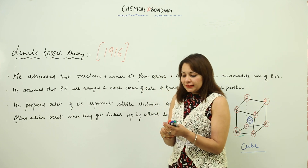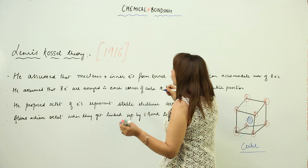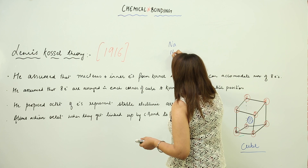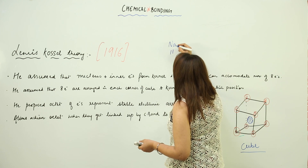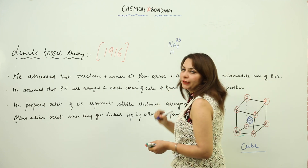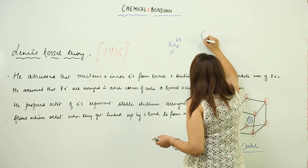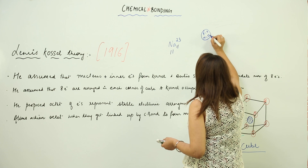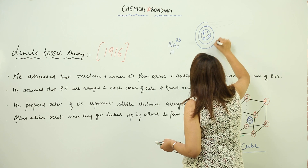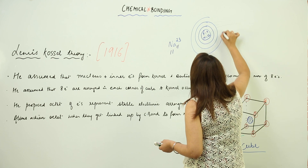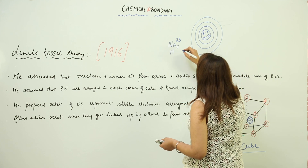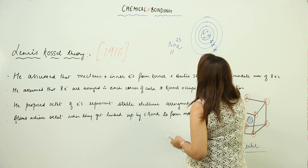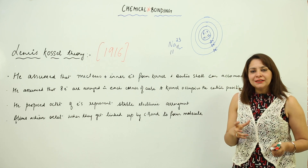I'll explain what the Bohr model was. Bohr stated that, for example, consider sodium with atomic number 11 and mass number 23. He said there is a nucleus containing protons and neutrons, with shells or energy levels around it. The electrons are distributed as two, eight, and one across those shells.